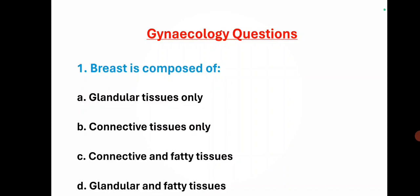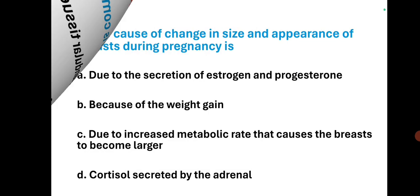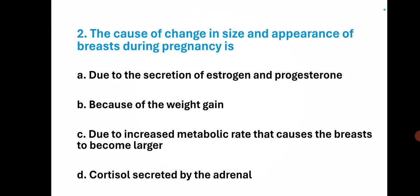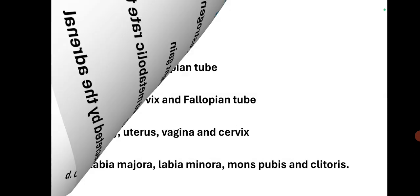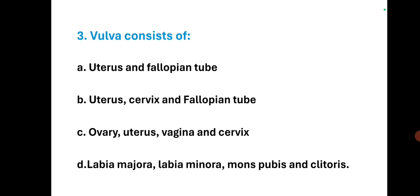The breast is composed of — the right option is — glandular and fatty tissues. The cause of changes in size and appearance of breast during pregnancy — the right option is — due to secretion of estrogen and progesterone.